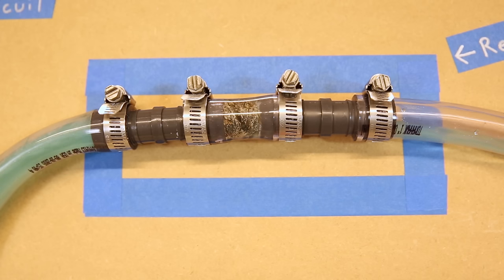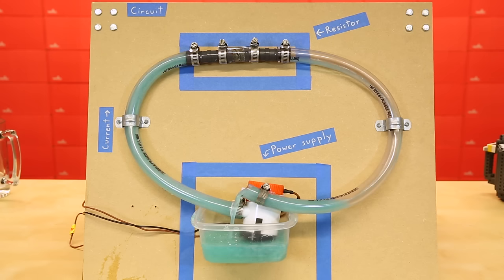Back to our water demo, we see that the steel wool, much like the resistor, restricts flow. If we were to add an even denser material, like a sponge, the water flow would decrease even further. The same holds true in electronics. For a given voltage, as resistance increases, current decreases.